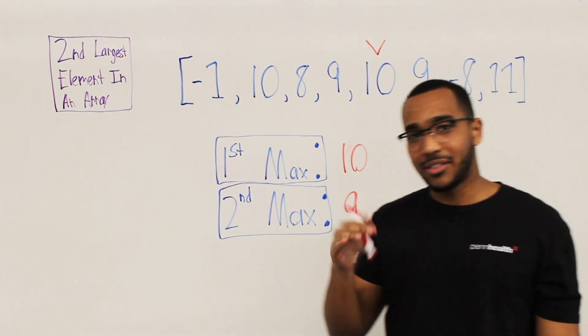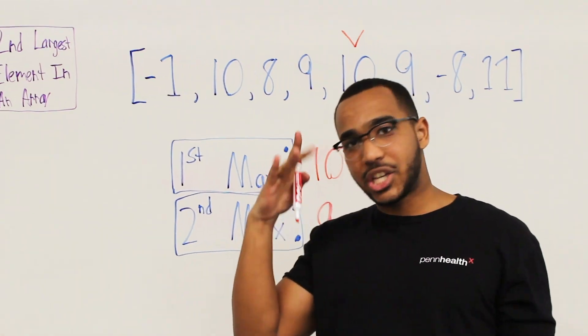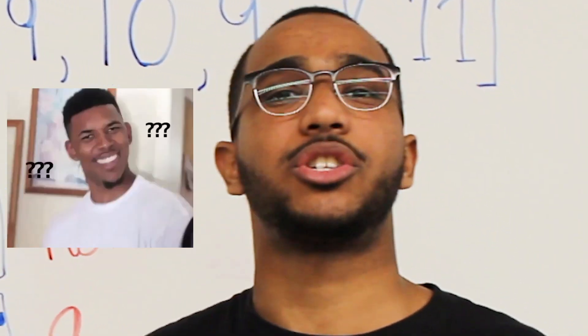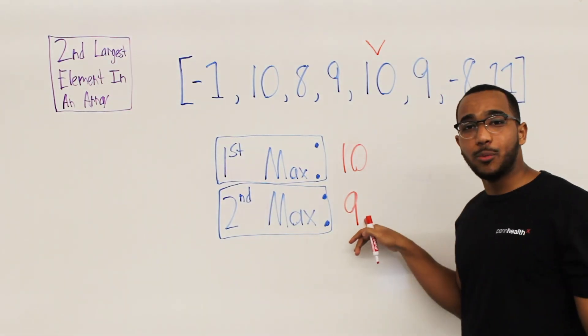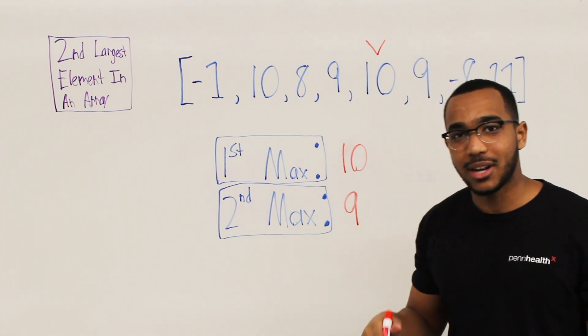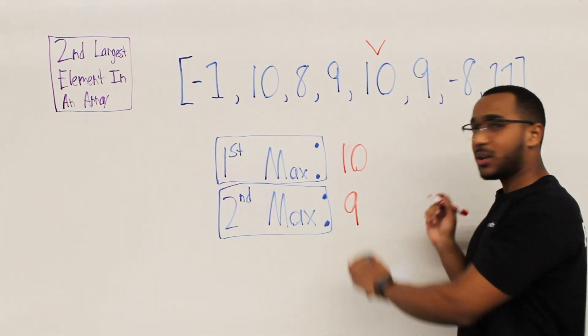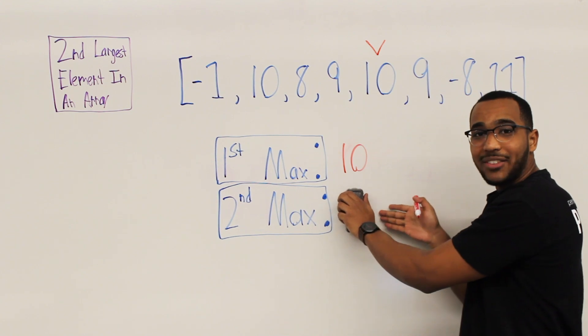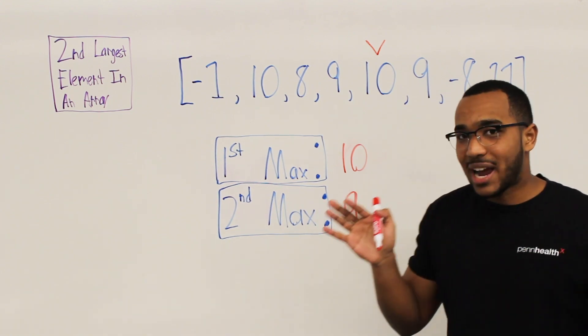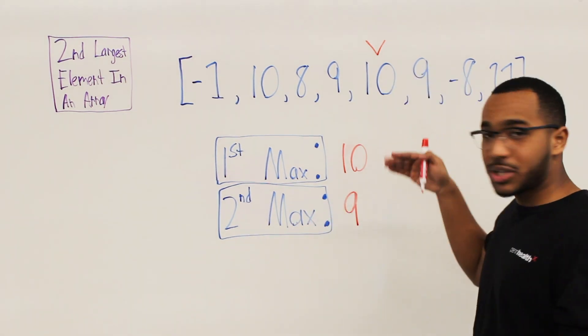But the problem is 10 is already our first maximum. So this is an edge case. This is why this is kind of like a beginner edge case vision question, because if we do put 10 as the second maximum, yes, it beats nine. But what it would do is it would wipe out the nine and we would have a 10 and a 10, we would lose track of the second maximum. So now we just move on.